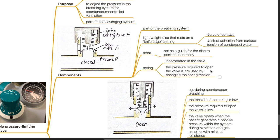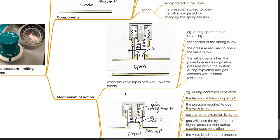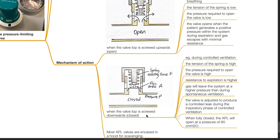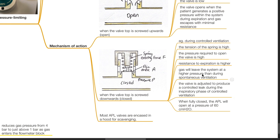A stem acts as a guide for the disc to be positioned correctly and a spring is incorporated in the valve. The pressure required to open the valve is adjusted by changing the spring tension. When the valve top is screwed upwards, such as during spontaneous breathing, the tension of the spring is low, and the pressure required to open the valve is low. The valve opens when the patient generates a positive pressure during expiration and gas escapes with minimal resistance. When the valve top is screwed downwards, such as during controlled ventilation, the spring tension is high, resistance to expiration is higher, and gas leaves the system at a higher pressure. The valve is adjusted to produce a controlled leak during the inspiratory phase of controlled ventilation. When fully closed, the APL valve will open at a pressure of 60 cmH2O. Most APL valves are encased in a hood for scavenging.